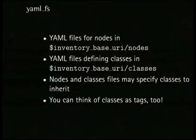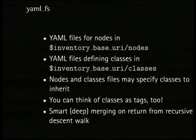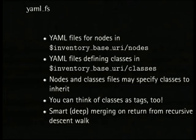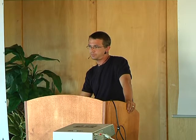The recursive part is that nodes and classes may specify other classes to inherit from — as many as you want. You can think of these classes as tags; you might want to address all systems with Postfix installed by simply talking to all nodes in the class 'postfix.' Reclass does smart deep merging on return from a recursive descent walk. There will be data replacement, and this is implemented in Python. When you have a set of values in a dictionary on one host and another set on another, you don't want to just replace the existing hash with a new one — you want to merge the two dictionaries. The same applies to lists.